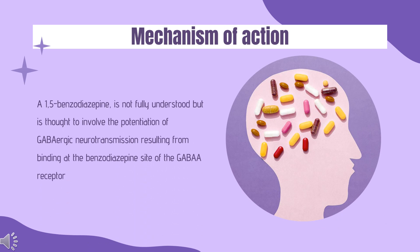Mechanism of Action: Benzodiazepines bind non-specifically to benzodiazepine receptors, which affects muscle relaxation, anticonvulsant activity, motor coordination, and memory. As benzodiazepine receptors are thought to be coupled to gamma-aminobutyric acid A (GABA) receptors, this enhances the effects of GABA by increasing GABA affinity for the GABA receptor. Binding of the inhibitory neurotransmitter GABA to the site opens the chloride channel, resulting in a hyperpolarized cell membrane that prevents further excitation of the cell.